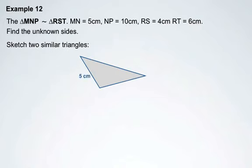First, you'll want to sketch two similar triangles and fill in the values that we know, labeling the vertices accordingly. So we have our first triangle here, which is MNP.